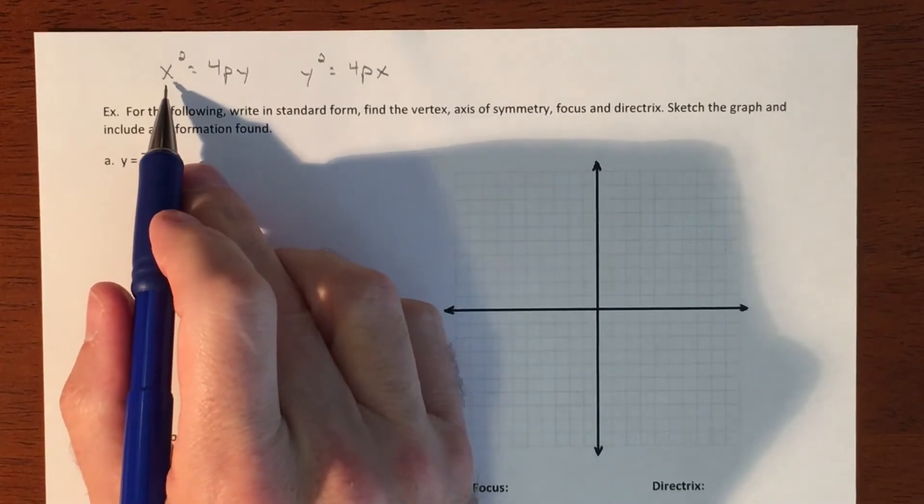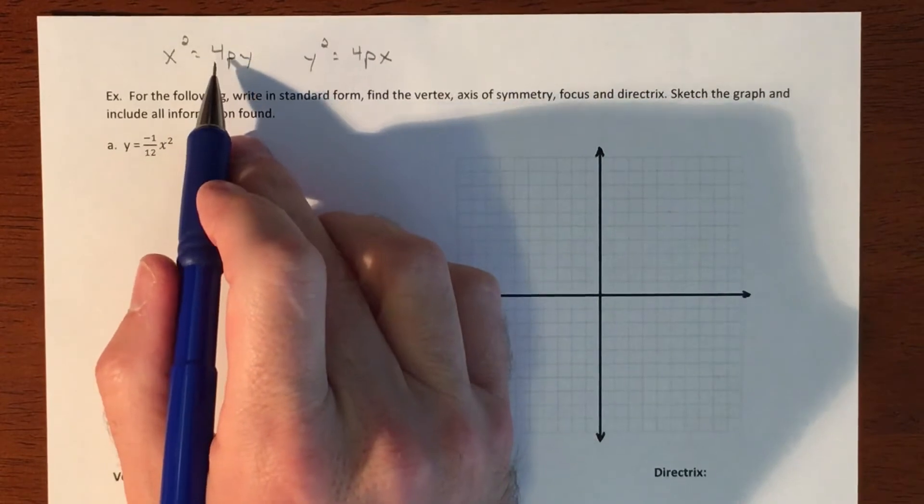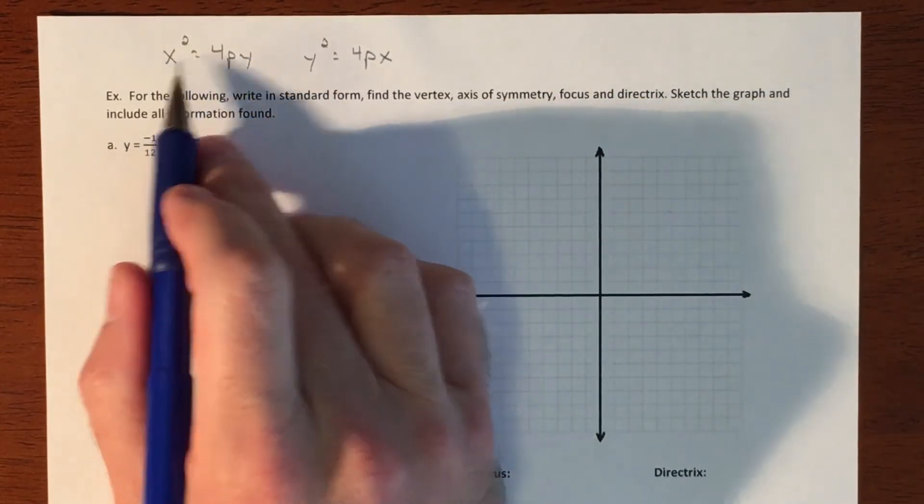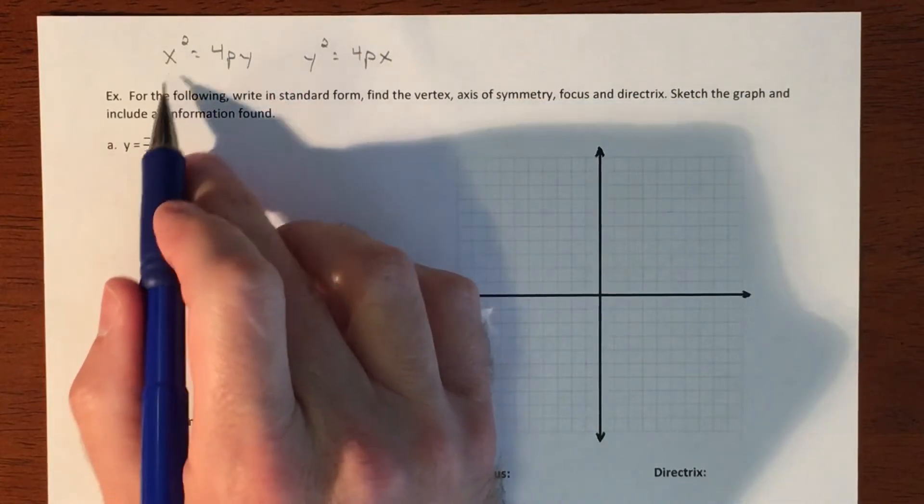All right, that's just something that's different than what you may potentially have seen. So yeah, so normally you kind of get y by itself, but in conics, it's helpful to get the x squared piece by itself.